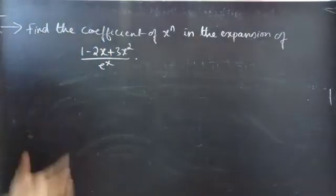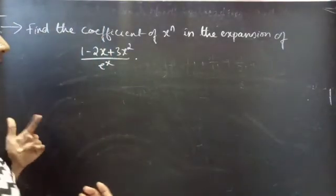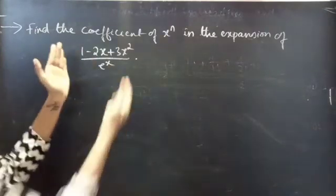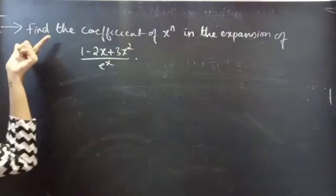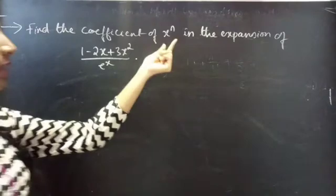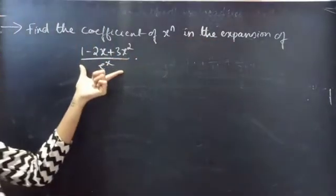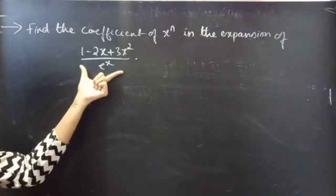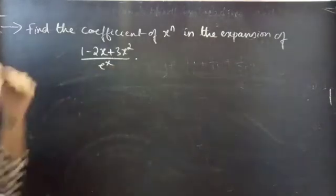We are going to find the coefficient of x power n in the expansion of the given expression. Find the coefficient of x power n in the expansion of 1 minus 2x plus 3x square by e power x.